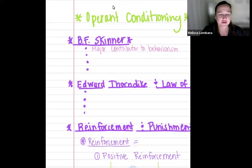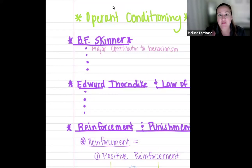Hello, everybody. We are on to our next section of learning, and we're going to be talking about operant conditioning. This is the second type of way that we learn — it's a process. We're going to start with the first subsection, which is B.F. Skinner. He's kind of like the major contributor to behaviorism — that's the face we see when we think of behaviorism, specifically with operant conditioning.